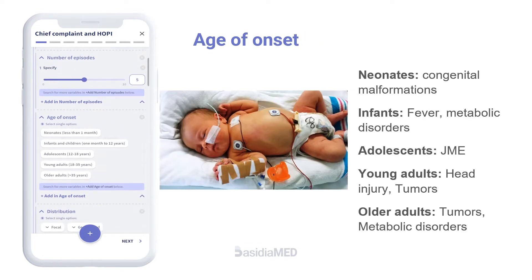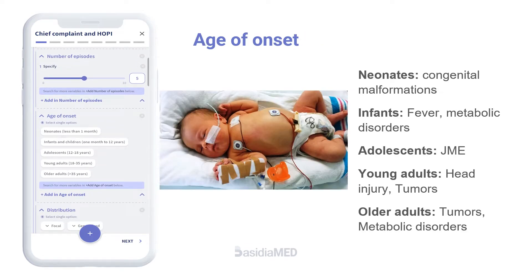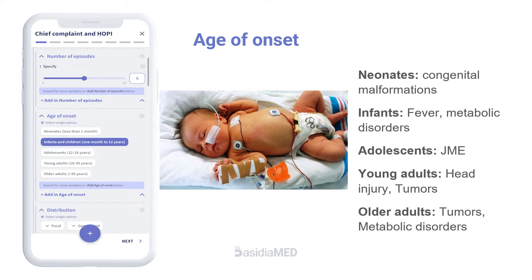The age of onset provides an important clue towards the diagnosis. Seizures in the neonatal period result from cerebral malformations such as lissencephaly, metabolic abnormalities such as hypoglycemia and hypocalcemia, or hereditary metabolic disease. Seizures in early infancy result from febrile seizures and enzyme disorders such as Krabbe disease and Tay-Sachs disease.